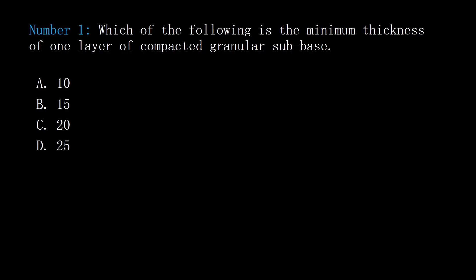Which of the following is the minimum thickness of one layer of compacted granular sub-base? A: 10, B: 15, C: 20, D: 25. Answer: C, 15.